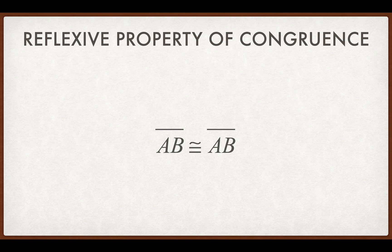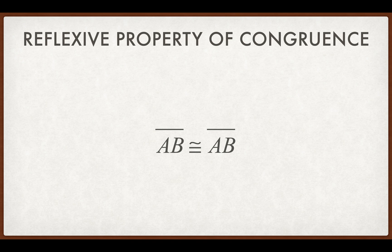Next, the reflexive property of congruence. If we have two line segments that are the same, so if I say line segment AB, it has to be congruent to itself. This is going to be very important once we get to geometric proofs. We're in geometry.